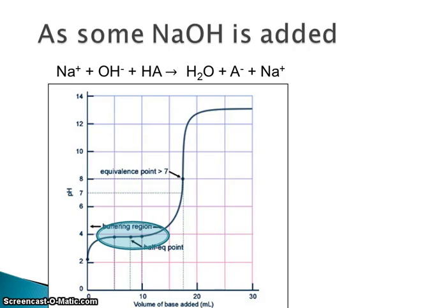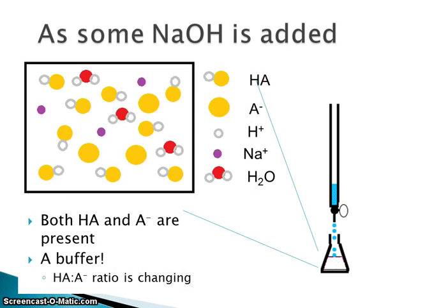As we add some hydroxide ion, it reacts with the HA to make water, producing the conjugate base A⁻ ions (the salt, of course, is dissociated) along with the counter ion from the strong base. The sodium ion is a spectator. As I add some NaOH, I have some HA left and I've also made some A⁻ ions — I have both present, effectively creating a buffer for this portion of the titration. You can use the Henderson-Hasselbalch equation here to find the pH.